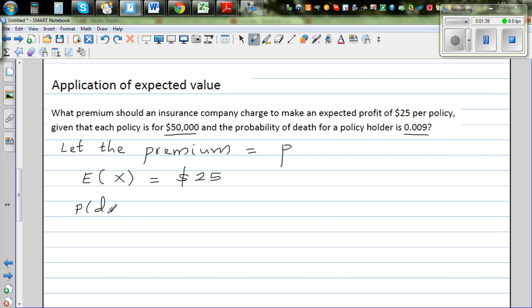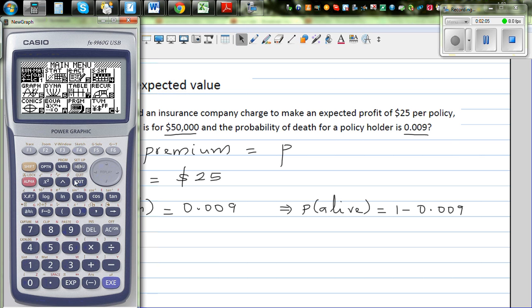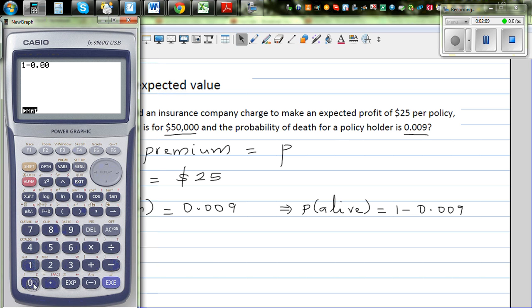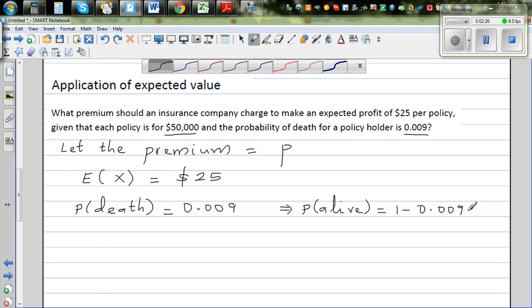And the probability that the person dies of that category is 0.009. So the probability of death is 0.009. This implies the probability of the policy holder being alive would be 1 minus 0.009, which is 0.991. So the probability that the person is alive is 0.991.